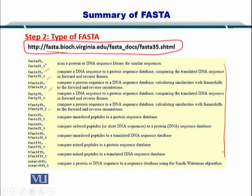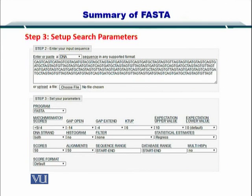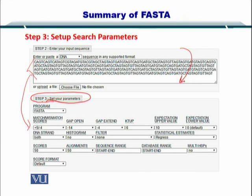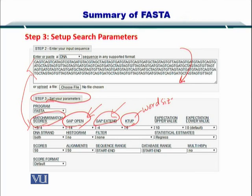Once you decide which type of algorithm you want to use, you can input your sequence copied from NCBI. In this example, it's a DNA sequence. Next, you set up your search parameters: the match and mismatch scores, the gap penalties — including gap opening and gap extension — and the K-tuples or word size. The word size is what FASTA uses when searching the databases, along with some other parameters.